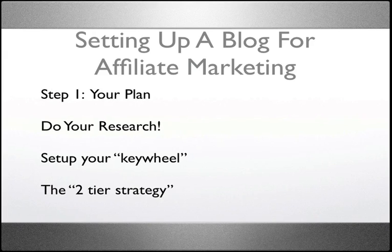The two-tier strategy. We've already looked at one tier. The second tier is going to be the name of the product. One approach is to use the name of the product in the actual domain name. The other is to use it heavily in the marketing and the linking that you do, not only inside your blog but when linking to it. These are some SEO tricks and strategies you need to consider when setting your blog up for affiliate marketing.